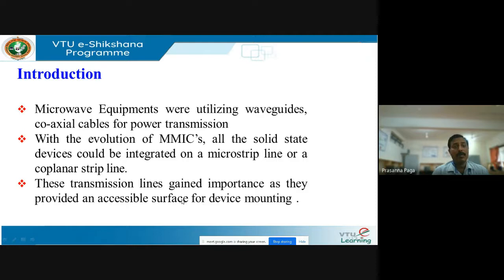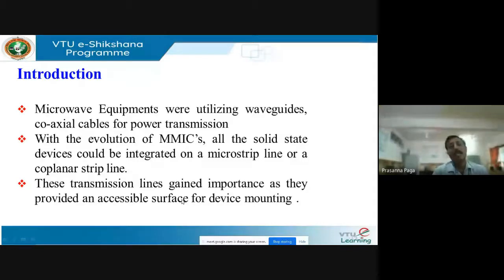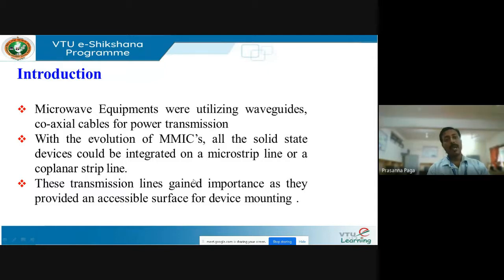So people started looking for alternatives, and the best alternative was microstrip transmission lines. These microstrip transmission lines could be easily integrated into a PCB and can also act as low-pass, high-pass, band-pass, or band-reject filters. You can integrate phase shifters, antennas, and transmission lines — everything on a single PCB — making microwave equipment more and more popular.